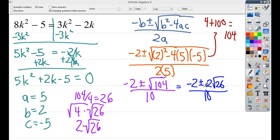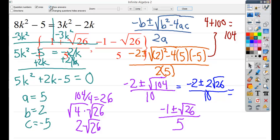Now I can reduce this because I have a 2 that goes into negative 2, 2, and 10. For my final answer, I might say something along the lines of negative 1 plus or minus the square root of 26 over 5. You could go ahead and do them as separate ones. Negative 1 plus the square root of 26 over 5 and negative 1 minus the square root of 26 over 5. And you end up with your final answer.